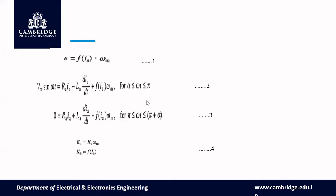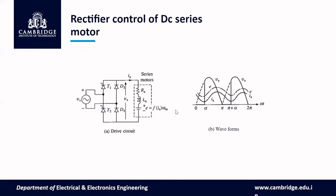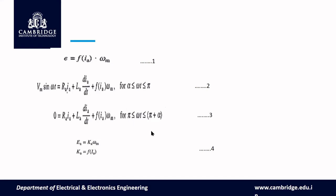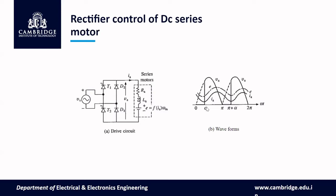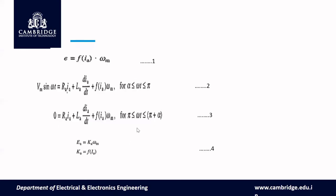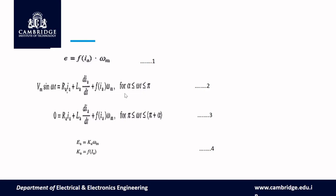For the freewheeling interval, the voltage will be zero. We substitute: 0 = Ra·Ia + La·(dIa/dt) + F(Ia)·ωM. These two equations cover the intervals α to π and π to π+α respectively. As seen in the voltage waveform, from π to π+α the voltage is zero. Because of the presence of the term F(Ia), these become non-linear equations and hence they have to be solved numerically.